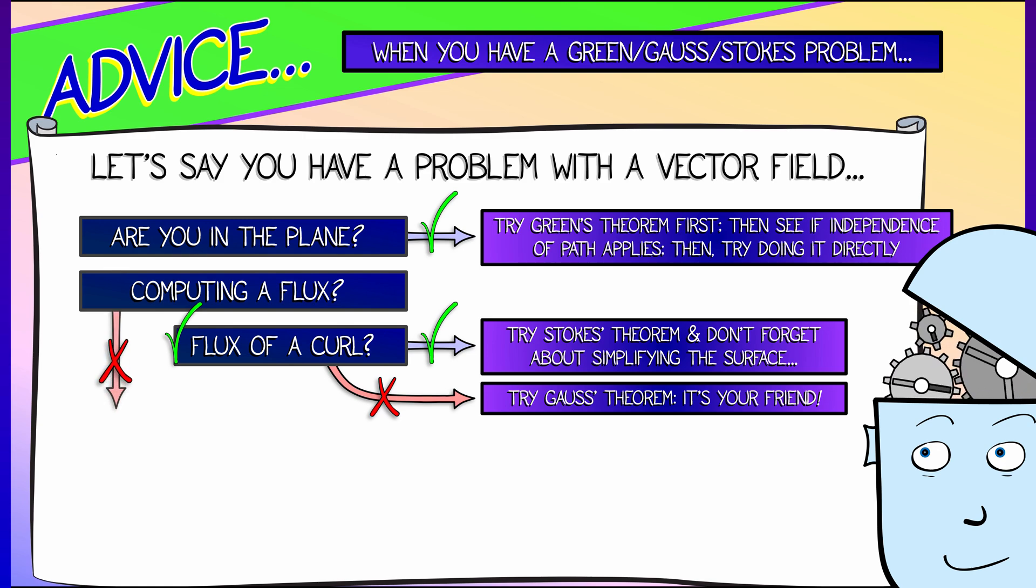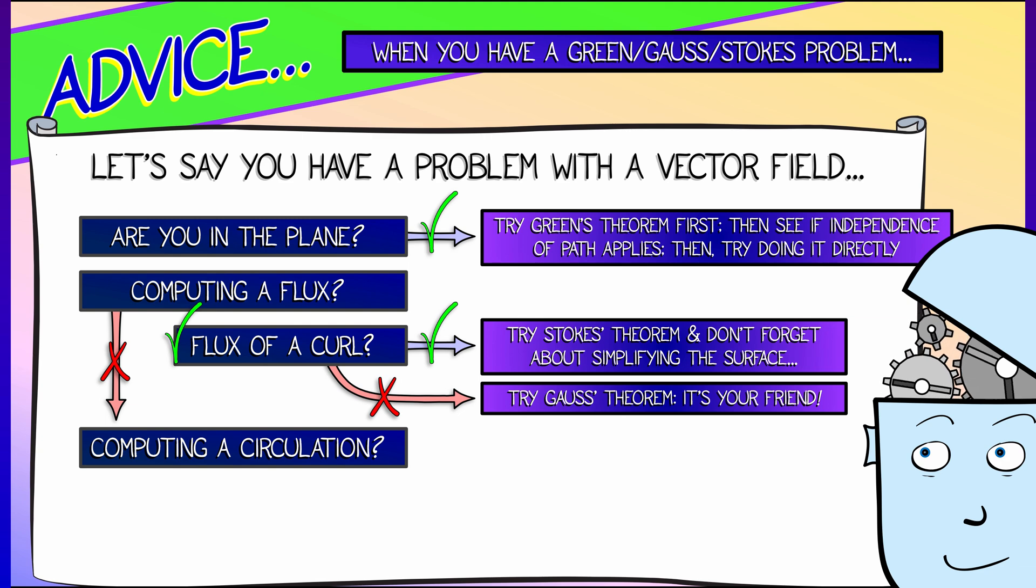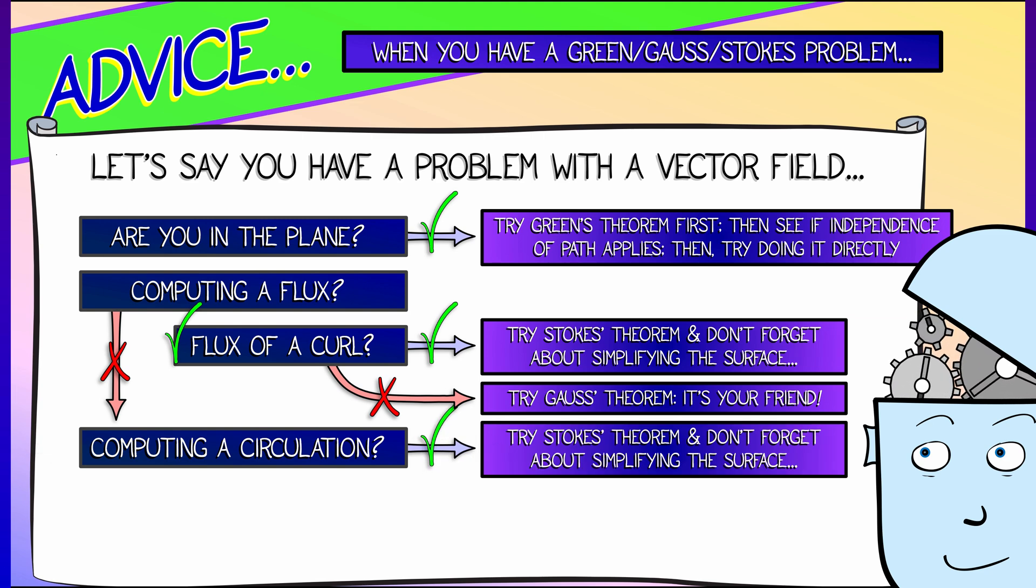Let's say you don't see the word flux anywhere in your problem. If you're computing a circulation, if you're trying to compute something along a closed loop, then try using Stokes theorem again. And don't forget about simplifying the surface. That is very, very helpful.